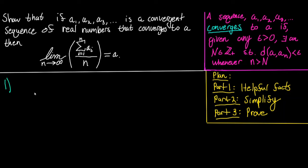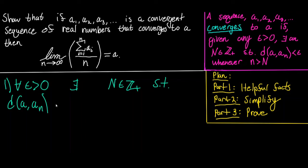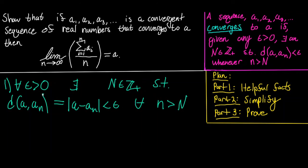Helpful fact 1: Since this sequence is convergent, rephrasing based on the definition of convergence, we know that given epsilon strictly greater than zero, there exists an N in the positive integers such that the distance between a and aₙ — which is the absolute value of a minus aₙ — is strictly less than epsilon for all n strictly greater than N.